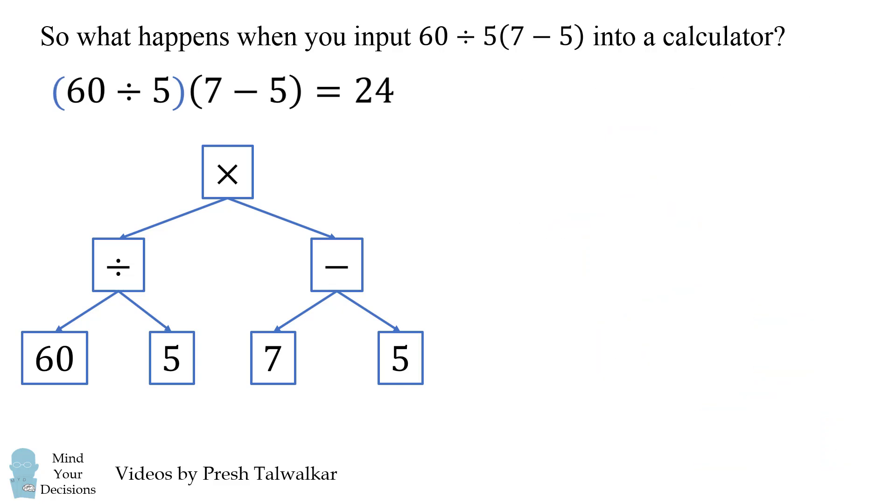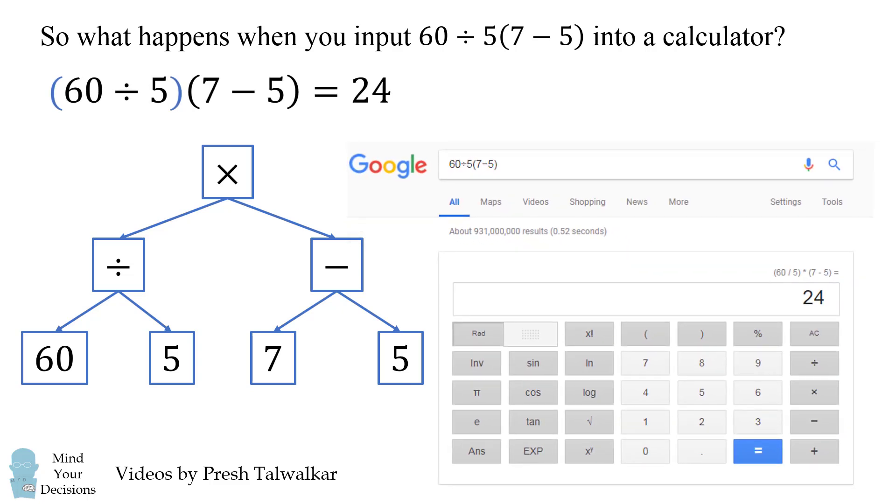Well, we can actually try this on several calculators. Let's put it into Google for example. 60 divided by 5 parentheses 7 minus 5. How does Google interpret this? Well, if we input this as a search, we get the Google calculator result of 24. And if you zoom in and look at this expression, you'll see it parses it exactly as the binary tree on the left. We do 60 divided by 5 and then we multiply it by the quantity 7 minus 5. And that's what gets us to the answer of 24.